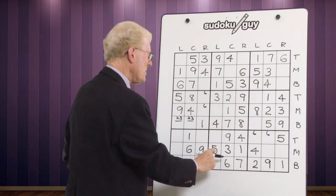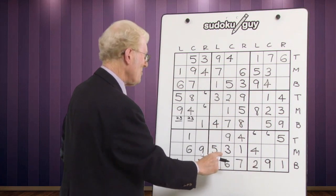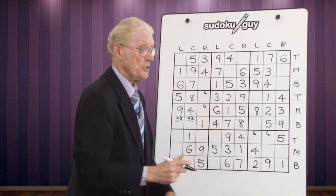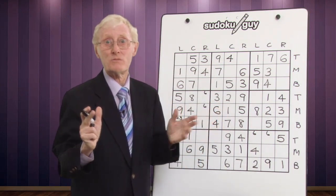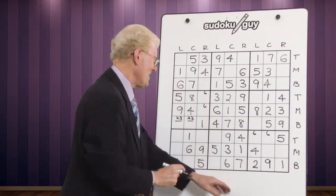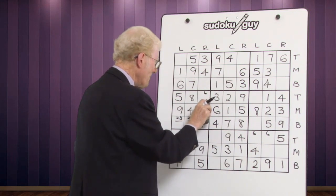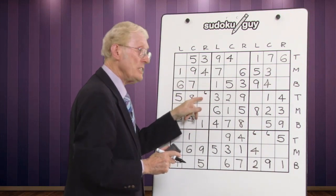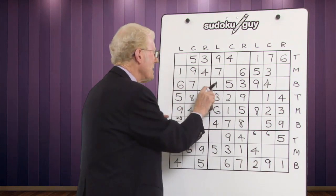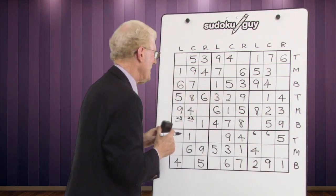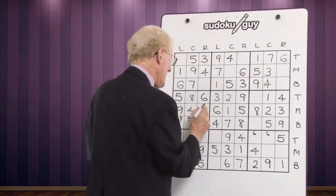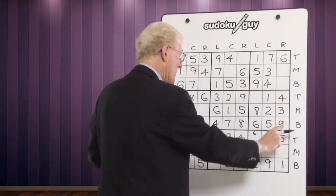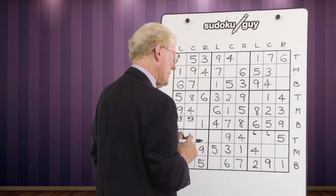We just did the fives in here — now it's time to do the sixes. Here we have a right, down here we have a center, so in this block it has to be on the left — it has to go there. That six means we've got the full block now done, and that cancels out this six. Before, we only put the six in two cells — the only two places a six could go. Now that that six is there, this becomes a six. We have a top, a middle, a bottom, so that becomes a six. In this block, we've only got one left — count them: one, two, three, four, five, six — it's a seven. Fantastic.